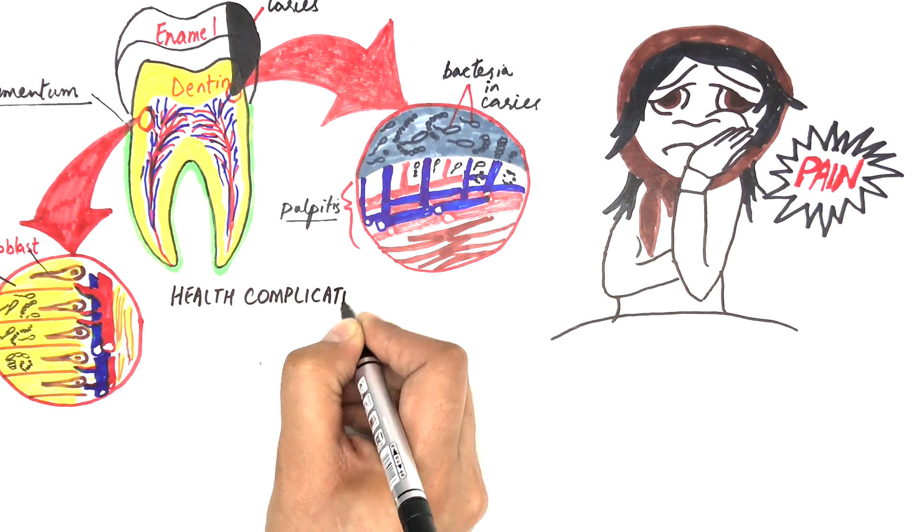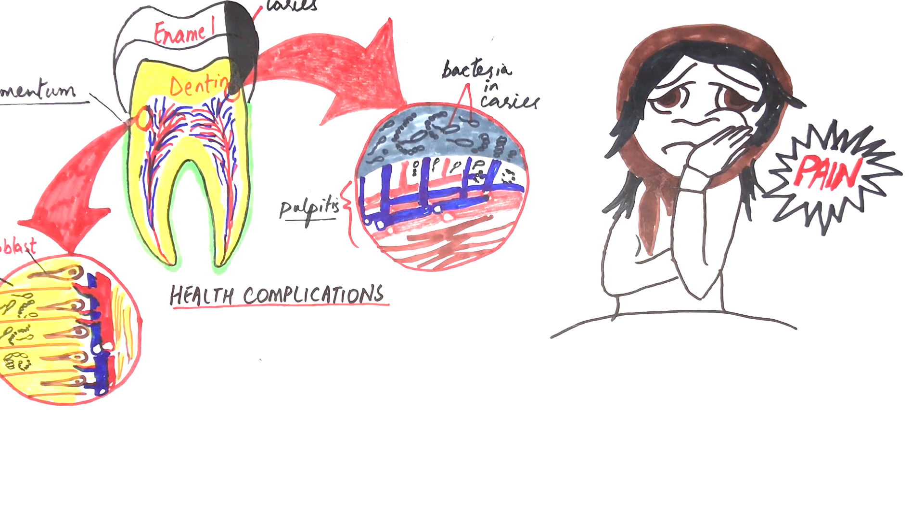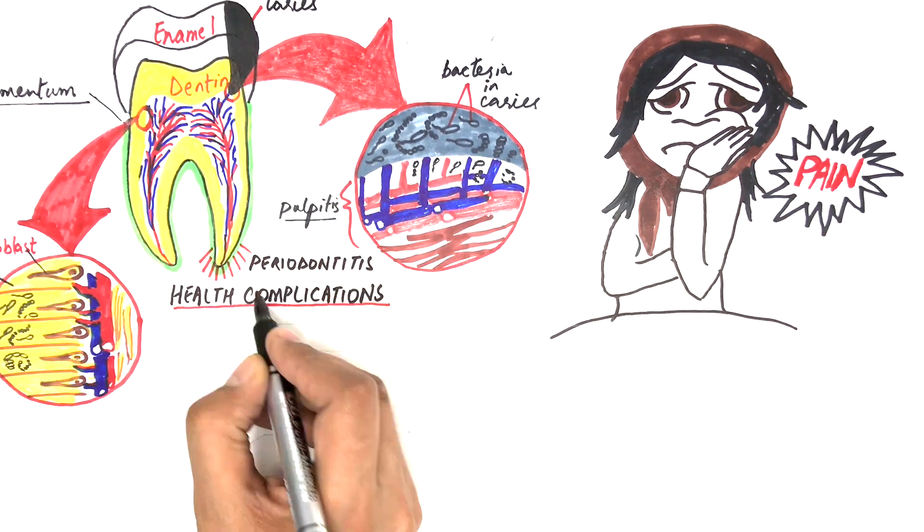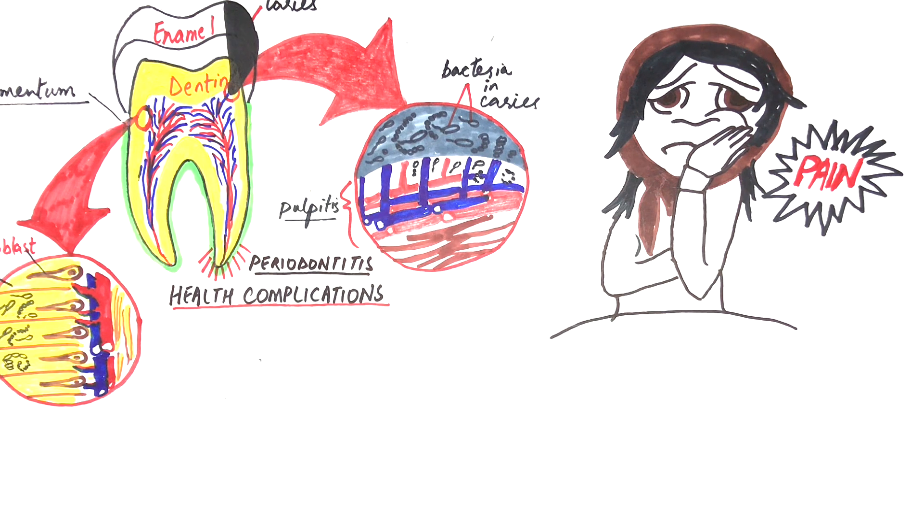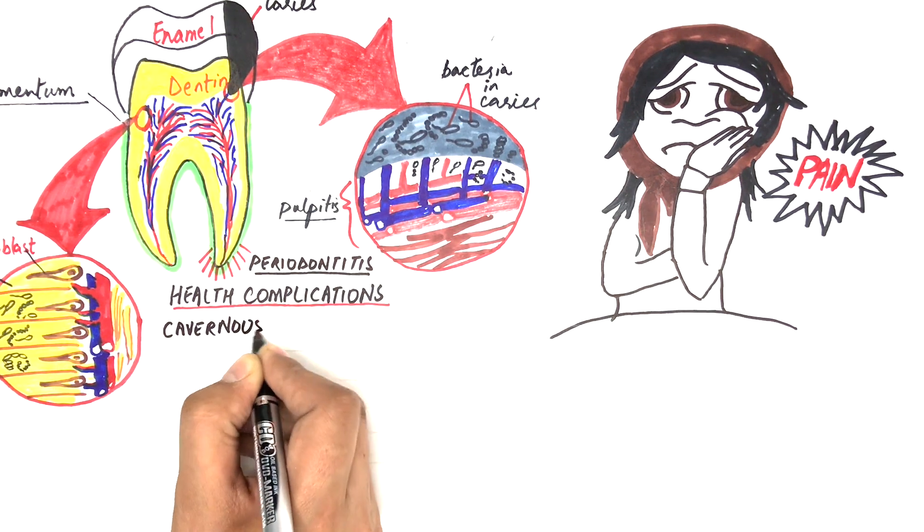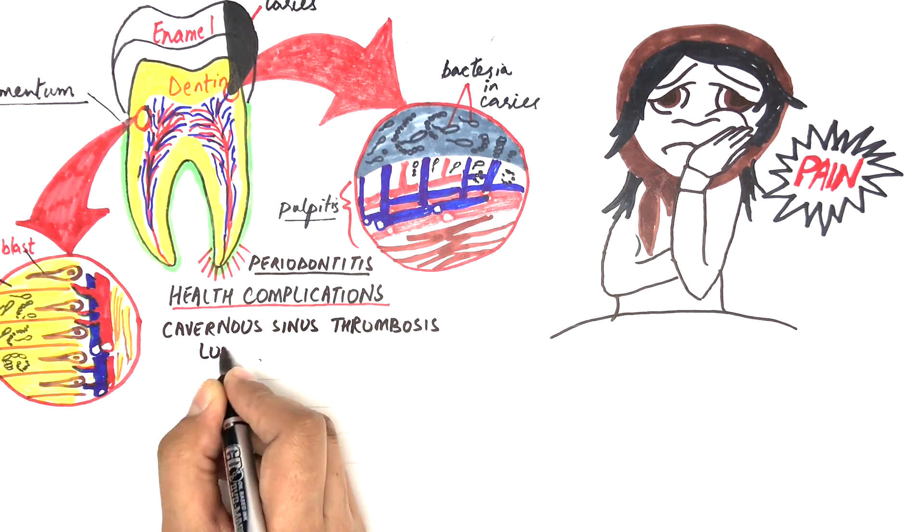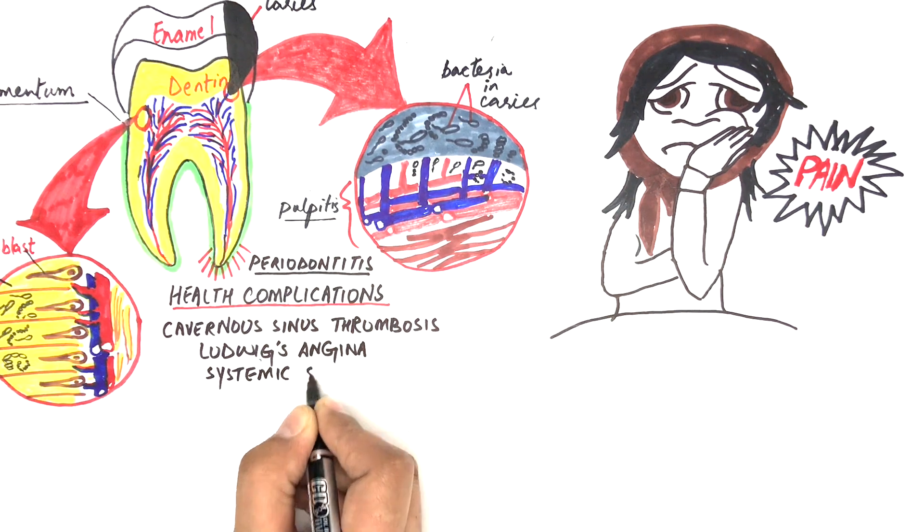Spread of pulpal inflammation into the sterile bone from the apical foramen leads to periodontitis and further spread of infection can cause some serious complications like cavernous sinus thrombosis, Ludwig's angina or systemic sepsis.